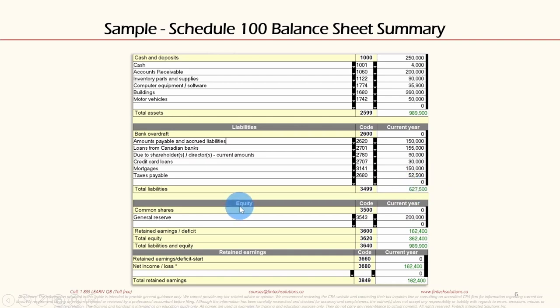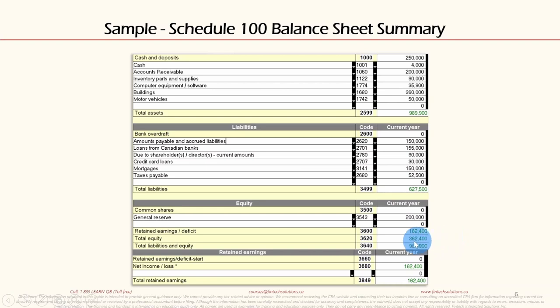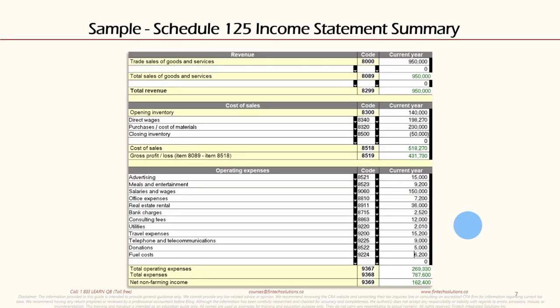The equity section of Schedule 100 shows: general reserve — code 3543 — is $200,000. Retained earnings — code 3600 — is $162,400. Total equity — code 3620 — is $162,400. Liabilities plus owner's equity equals $989,900, which matches total assets, confirming the fundamental bookkeeping equation: assets equal liabilities plus equity.